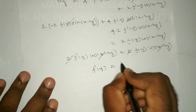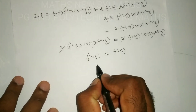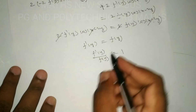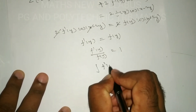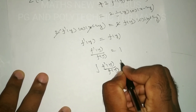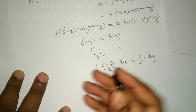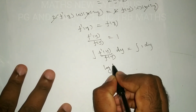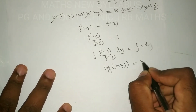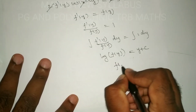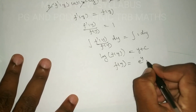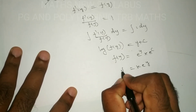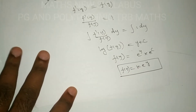So f'(y) equal to f(y), which means f'(y) divided by f(y) equals 1. Integrating both sides: the integral of f'(y)/f(y) dy equals the integral of 1 dy. This gives ln|f(y)| equal to y plus constant, so f(y) equals k times e^y for some constant k.